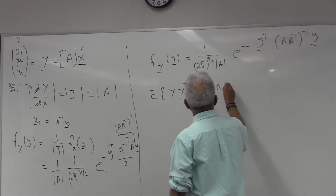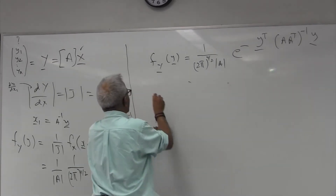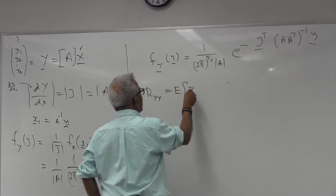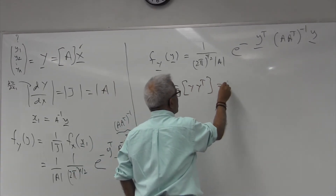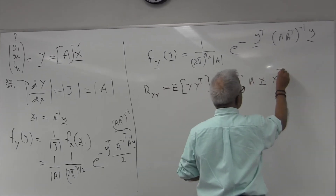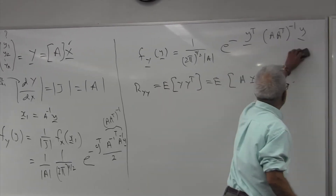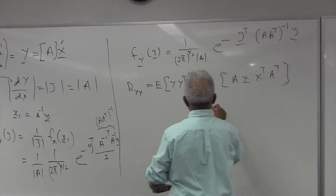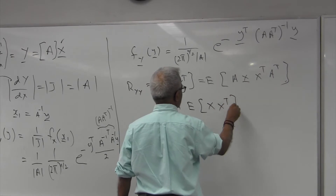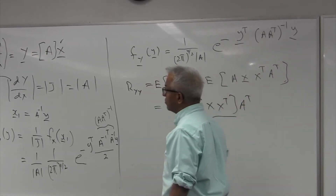R_yy = E[y y^T]. Since y = Ax, and y^T = x^T A^T, this becomes A E[x x^T] A^T = A R_xx A^T. The variables x1 through xn are unit variance, zero mean, and independent, so what is R_xx? The off-diagonal entries E[x_i x_j] for i ≠ j are zero.